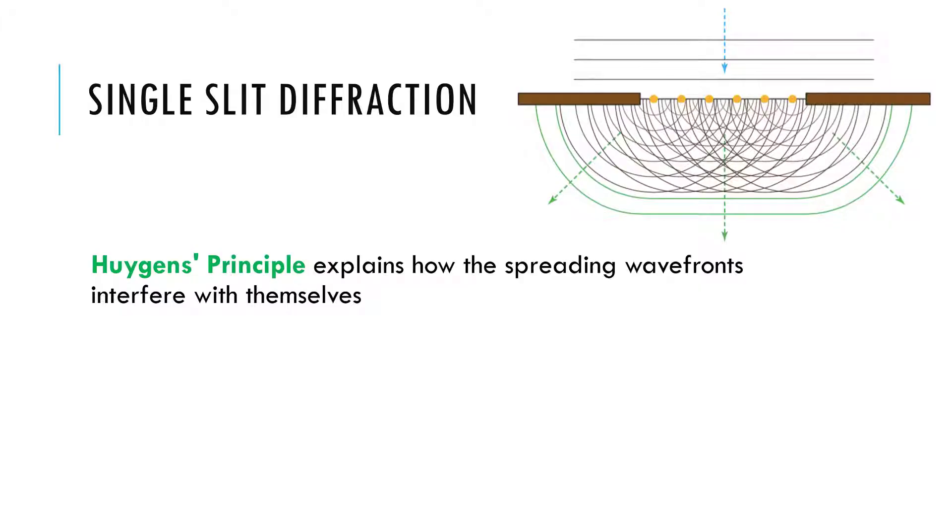So the idea is that every wave front, Huygens was a Dutch physicist with some crazy ideas, like every wave front can be thought of as an infinite number of little tiny baby waves called wavelets.